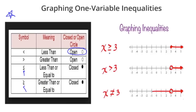Let me show you some examples. Here we have x is greater than or equal to 3. Because 3 can be a solution, the circle at 3 is closed. That's why the arrow goes to the right. Now compare that to x is just greater than 3: because x has to be bigger than 3, 3 is not a solution, and that's why it's an open circle. So greater than or equal to 3 is a closed circle, and greater than 3 is an open circle.